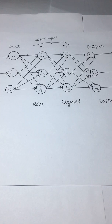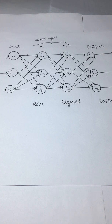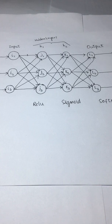Hello everyone. Welcome to another session in the deep learning series. Today we will take up an example network. We will initialize weights and bias with random values, fix the input and output values, calculate the forward pass across each layer, calculate the gradients and errors, and back propagate across the network as well.